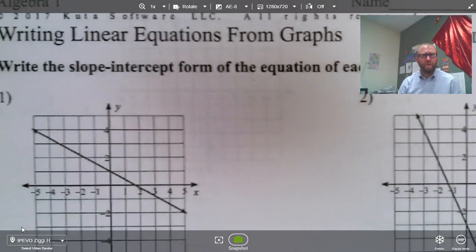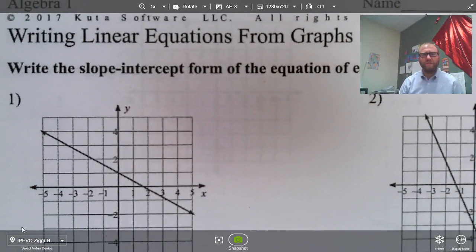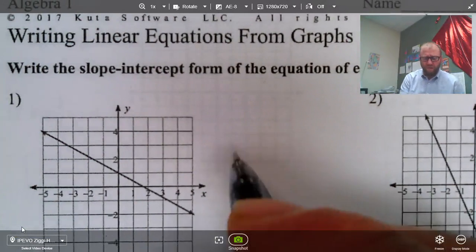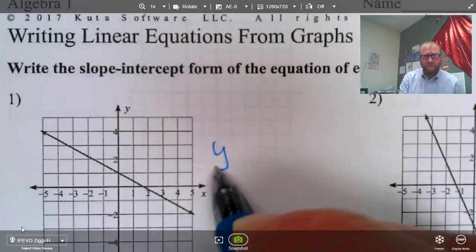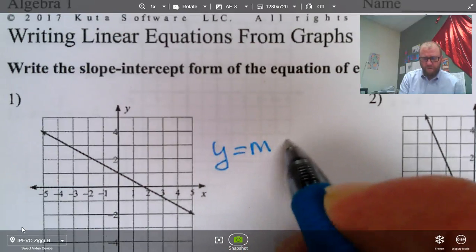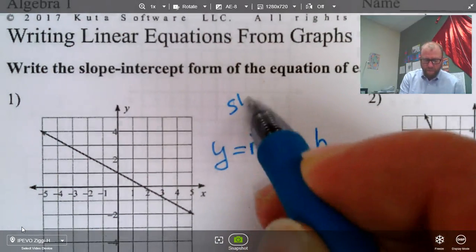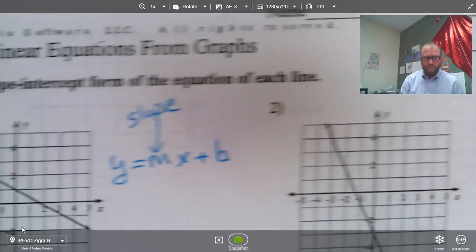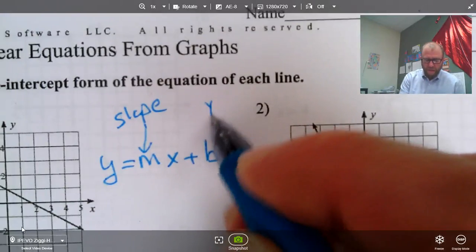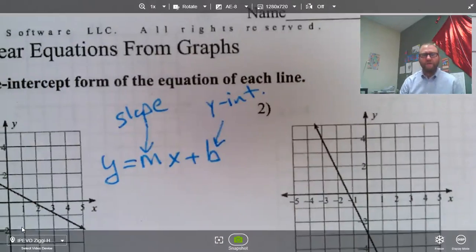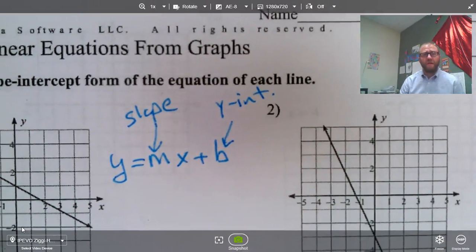All right. In this video here, we're going to be writing linear equations from graphs. So we're given the graph, we have to write out the linear equation that goes with it. Our equations will be in the form y equals mx plus b, where m is the slope and b is the y-intercept, and of course, the line crosses the y-axis.